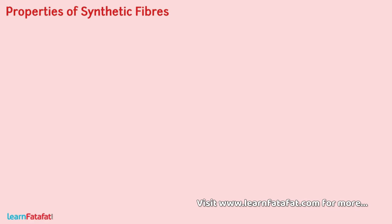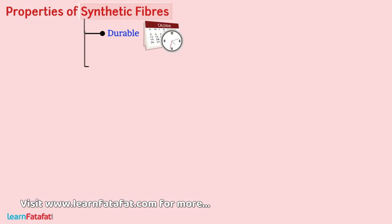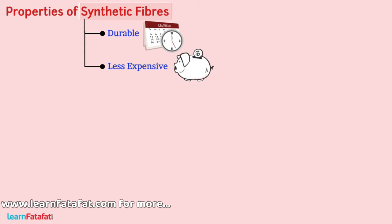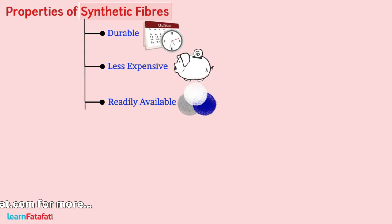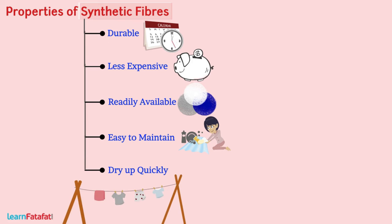What are the properties of synthetic fibers? Basically, synthetic fibers are durable, less expensive, readily available, and easy to maintain. These fibers also have the ability to dry up quickly. This is the reason why we use synthetic fibers in umbrellas.